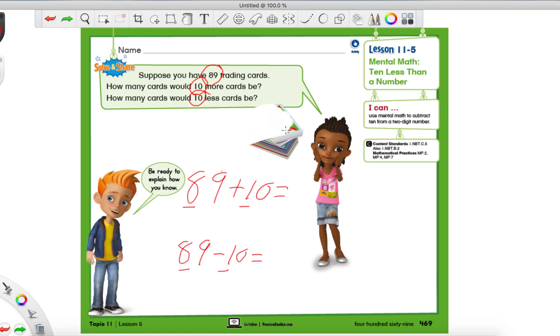So, the first way we can solve this is with a quick picture. So, just by using our 10 sticks and our 1 circles. So, if we have 89, let's draw the number 89. So, we have 1, 2, 3, 4, 5, 6, 7, 8 tens. Whew! That's a lot. And then, how many 1's? 9. So, 1, 2, 3, 4, 5, 6, 7, 8, and 9. So, we drew the number 89.